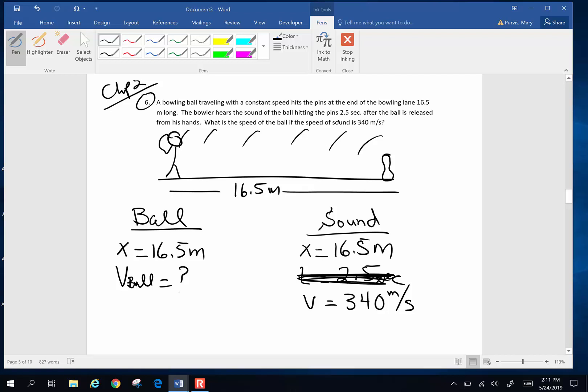So it takes 2.5 seconds is my total time. My total time is going to be 2.5 seconds and that is going to be the time for the ball to travel down the alley plus the time for the sound to travel back here. So I don't know what either one of these is, but I can calculate the time for the sound. So if I can calculate the time for the sound, then I can use that to calculate the time for the ball. Once I know the time for the ball, I can find the velocity of the ball. So that's the path I'm going to take.